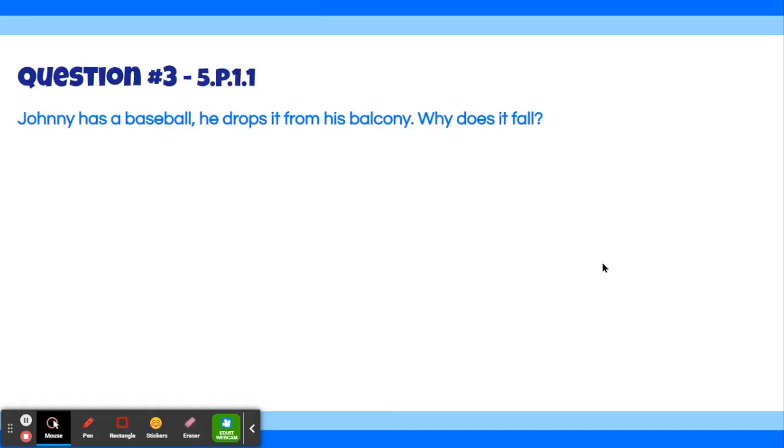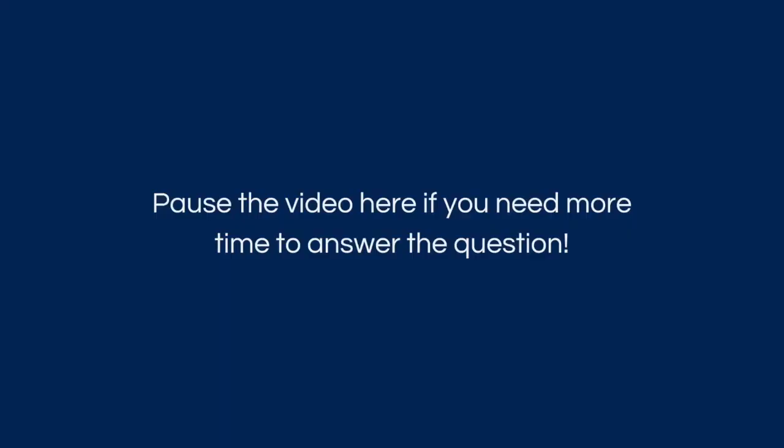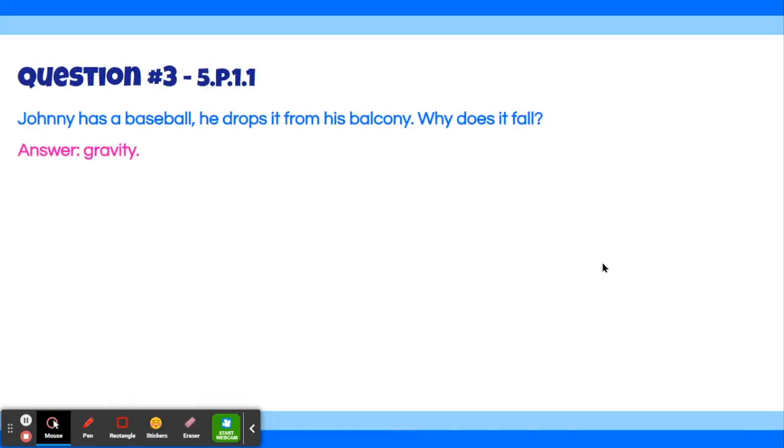Let's move on to question 3. Johnny has a baseball and he drops it from his balcony. Why does it fall? Well, the answer is gravity, something we've all heard of at least once.